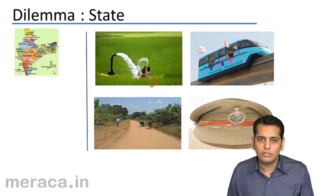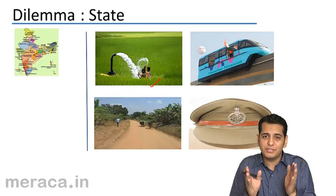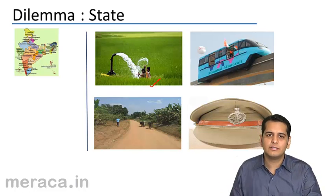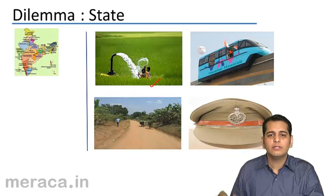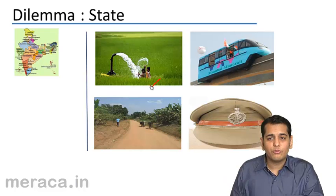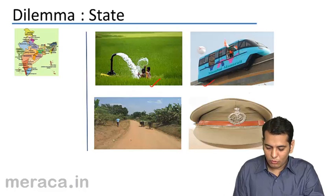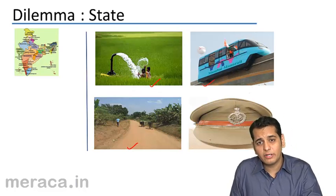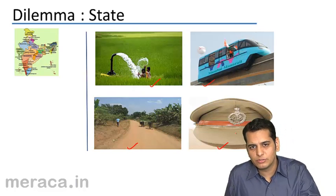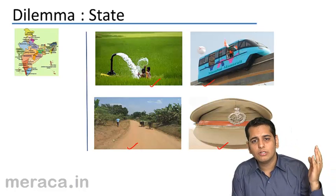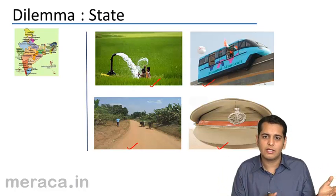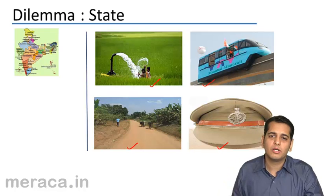The state has many expenses to deal with. Again, it has to make choices because the budget it gets from the center and the incomes it generates from its masses are limited, but the expenses are way beyond the income and budget allocated. It can either go for irrigation facilities, transportation facilities, a good network of roads, or better services like police, traffic police, and other bureaucratic services. Same as an individual and a family, the state also has to manage its expenses and incomes. This is nothing but economics for the state.